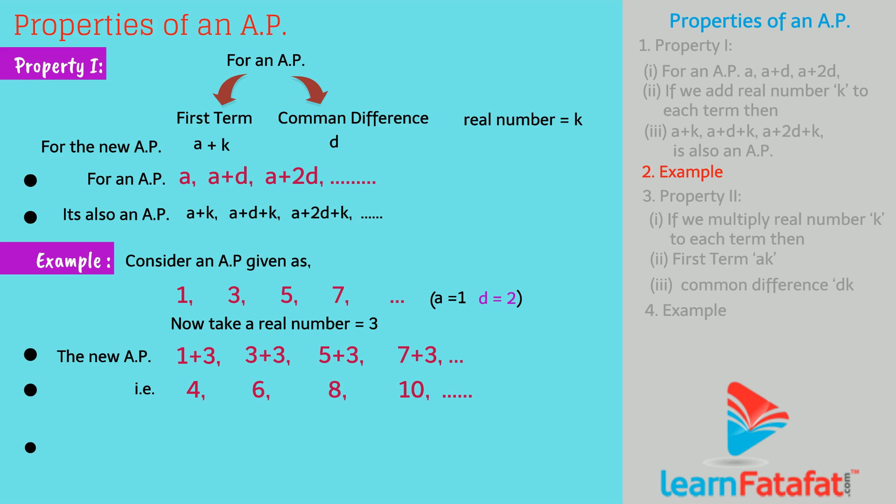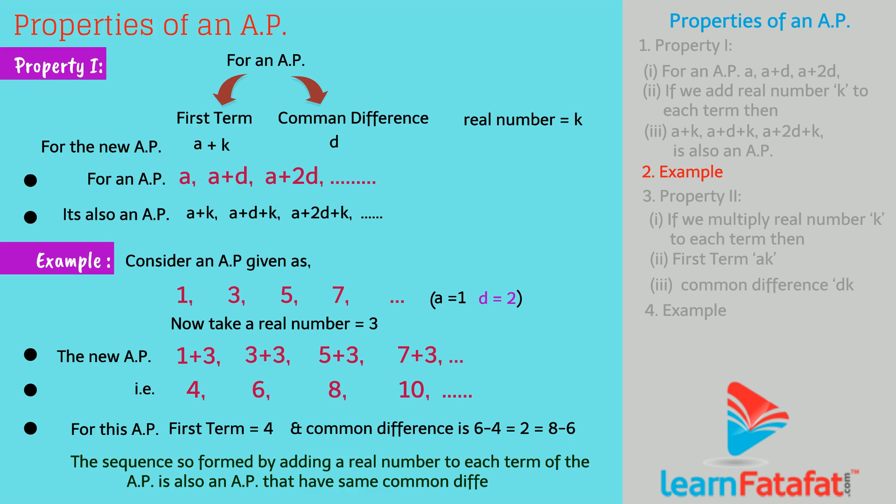For this AP, the first term is 4 and common difference is 6 minus 4 is equal to 2 is equal to 8 minus 6. Hence, we can say that the sequence so formed by adding a real number to each term of the AP is also an AP that has the same common difference.